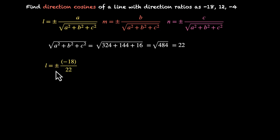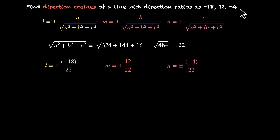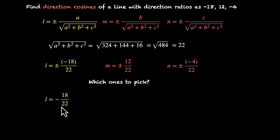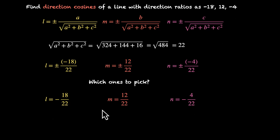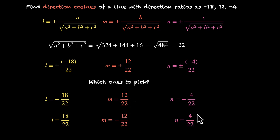So L = ±(−18/22), M = ±(12/22), and N = ±(−4/22). If we take the positive sign — matching the signs of the direction ratios — we get L = −18/22, M = 12/22, N = −4/22. The opposite set, moving in the reverse direction, gives L = 18/22, M = −12/22, N = 4/22.